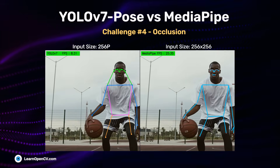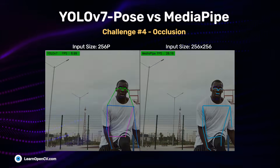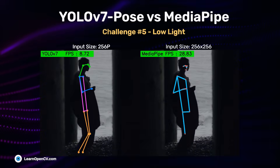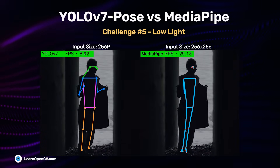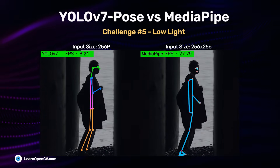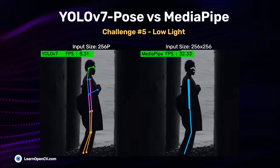In low lighting conditions, MediaPipe makes more mistakes compared to YOLO V7, though it is still a close call.